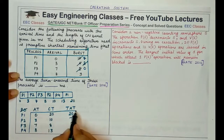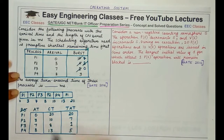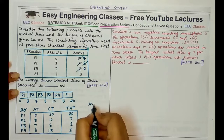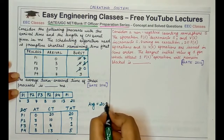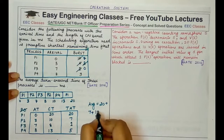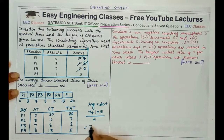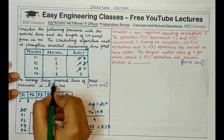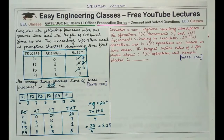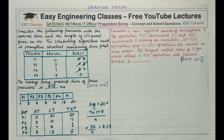Average turnaround time is the sum of all turnaround times divided by the total number of processes: (20 + 7 + 1 + 5) / 4 = 33 / 4 = 8.25 milliseconds. If doing this in a GATE numerical type question, follow any specified instruction about decimal places.